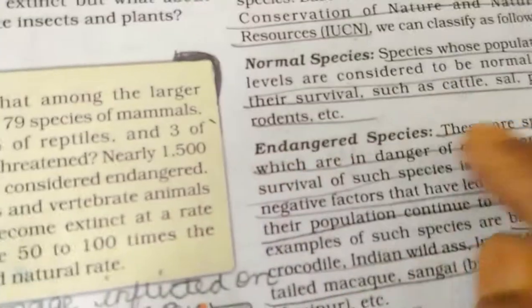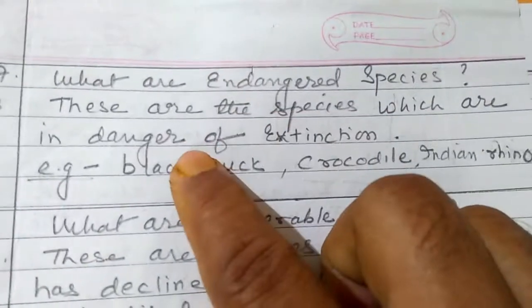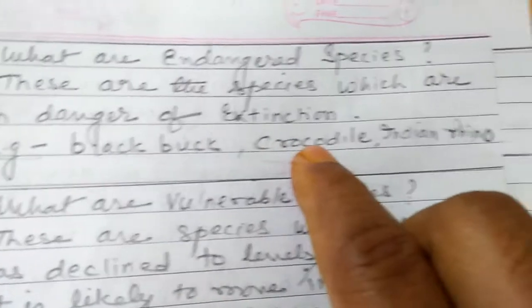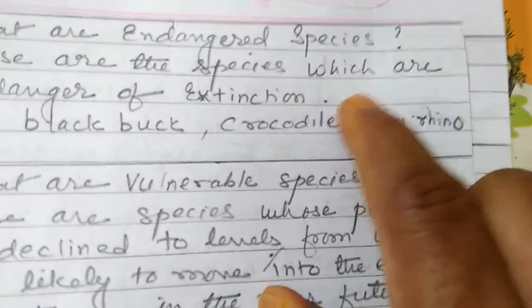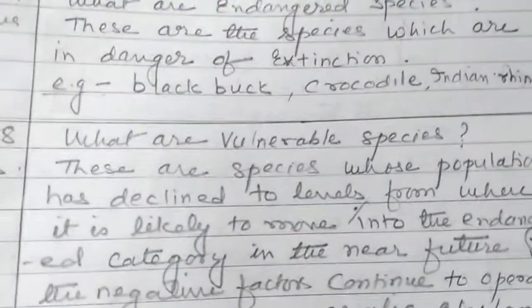Question number seven: What are endangered species? These are species which are in danger of extinction. Examples include blackbuck, crocodile, and Indian rhino, whose populations may reduce if negative factors continue to prevail.